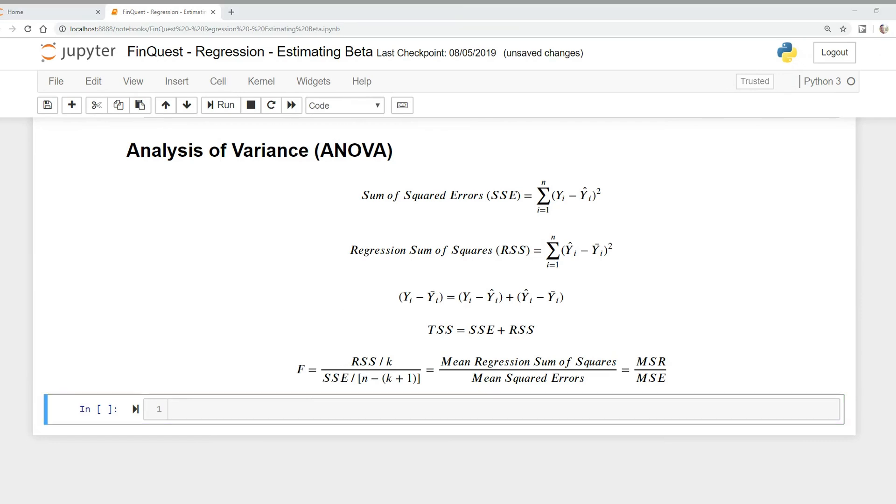Analysis of variance helps us determine the usefulness of the independent variable or variables in explaining the variance in the dependent variable. So when we do an analysis of variance, we conduct an F-test.